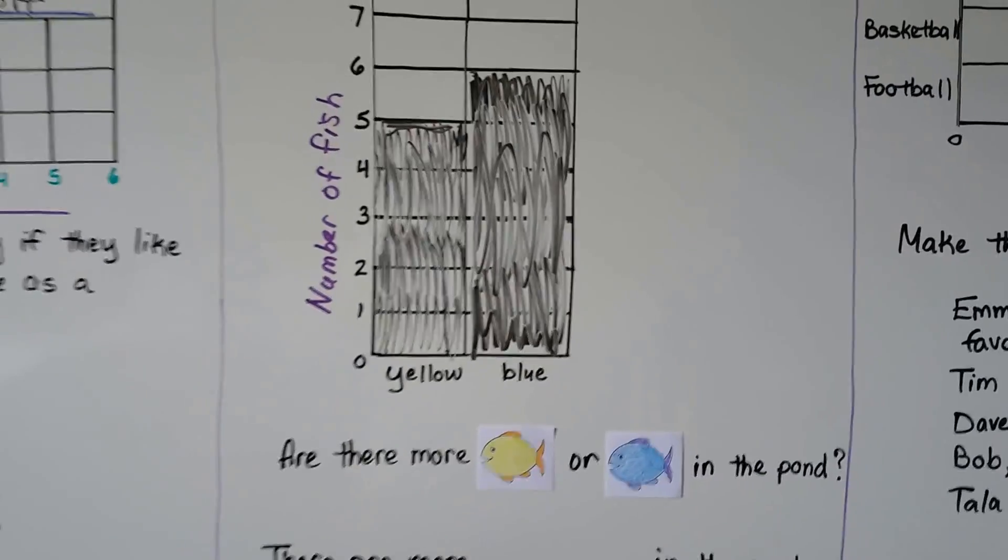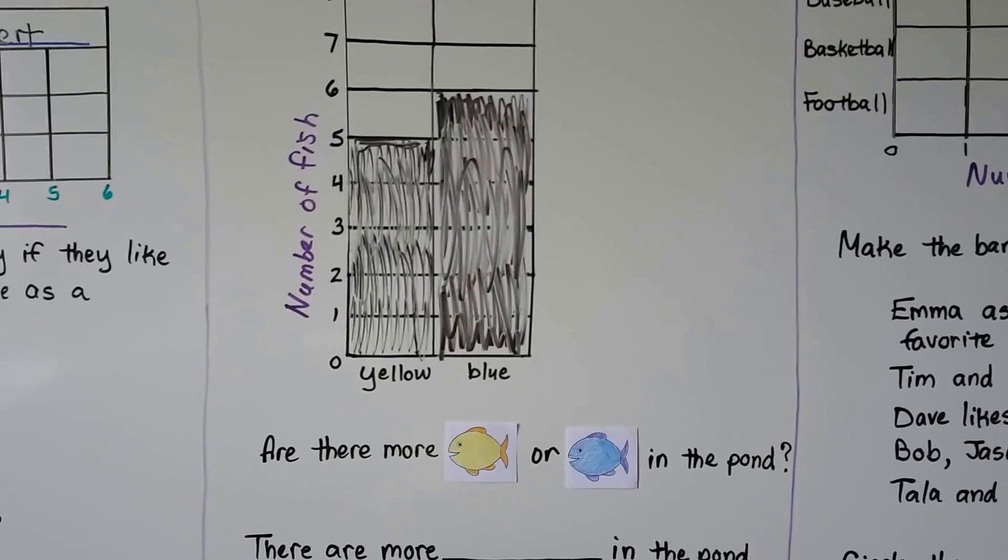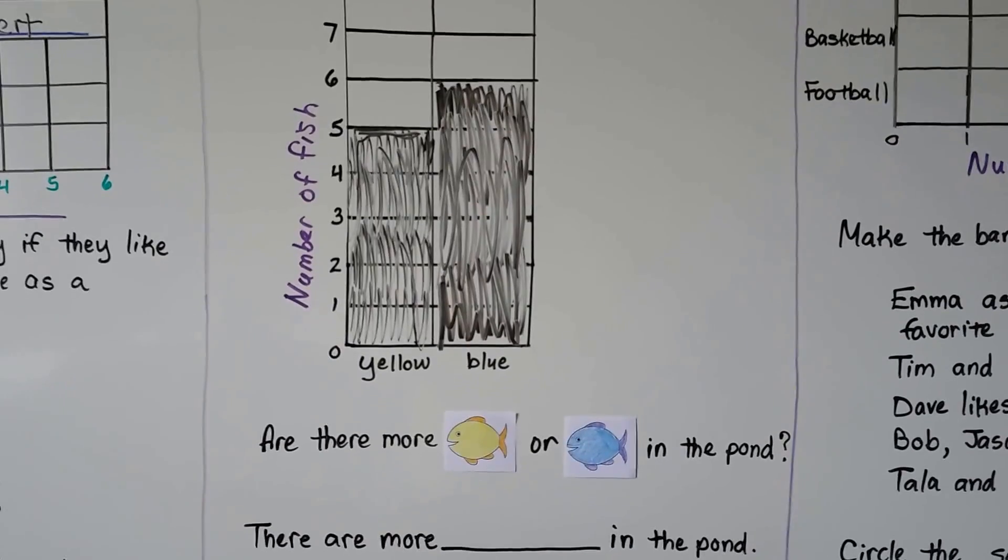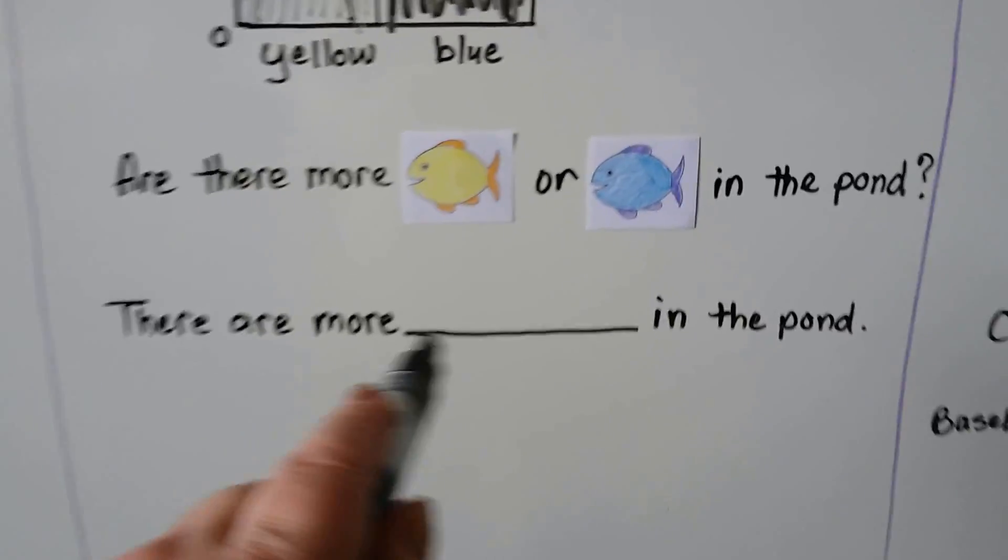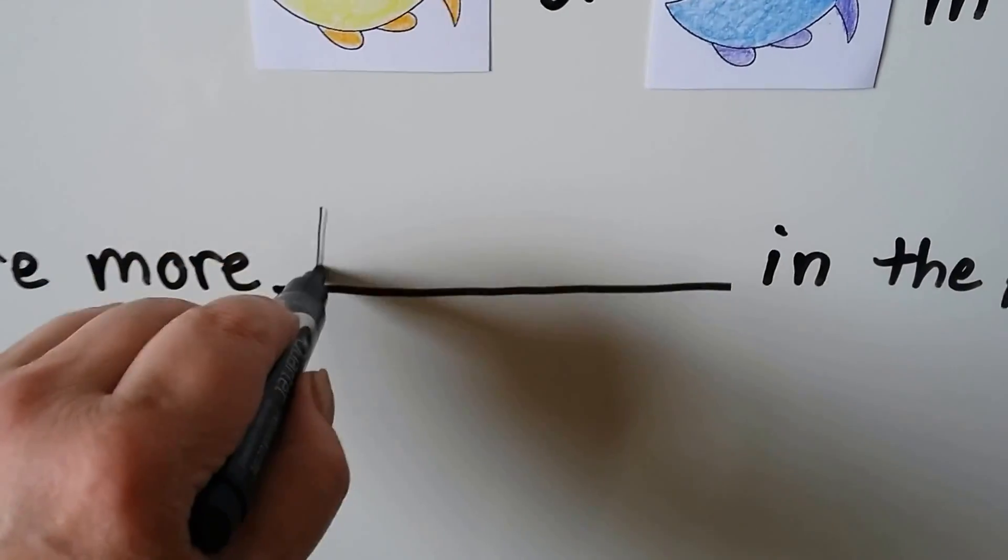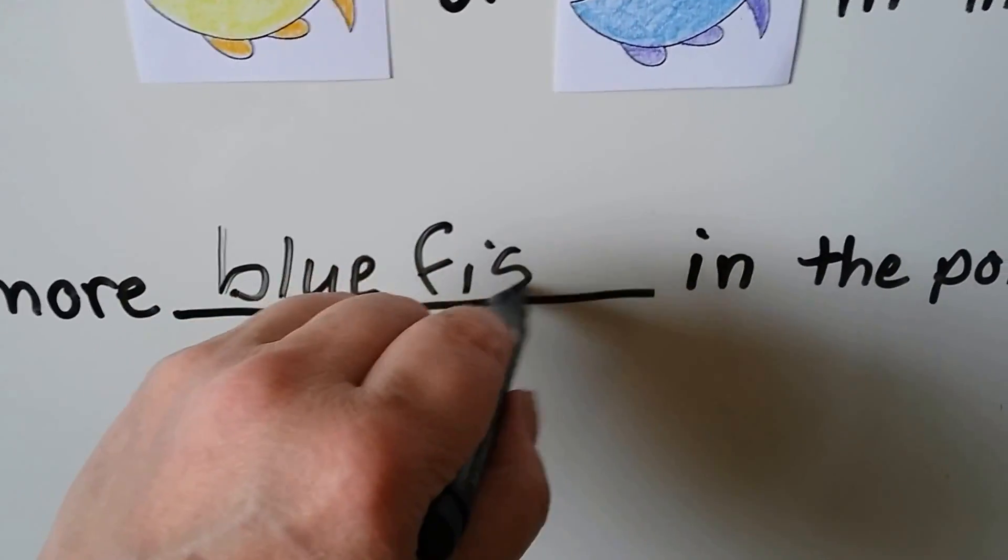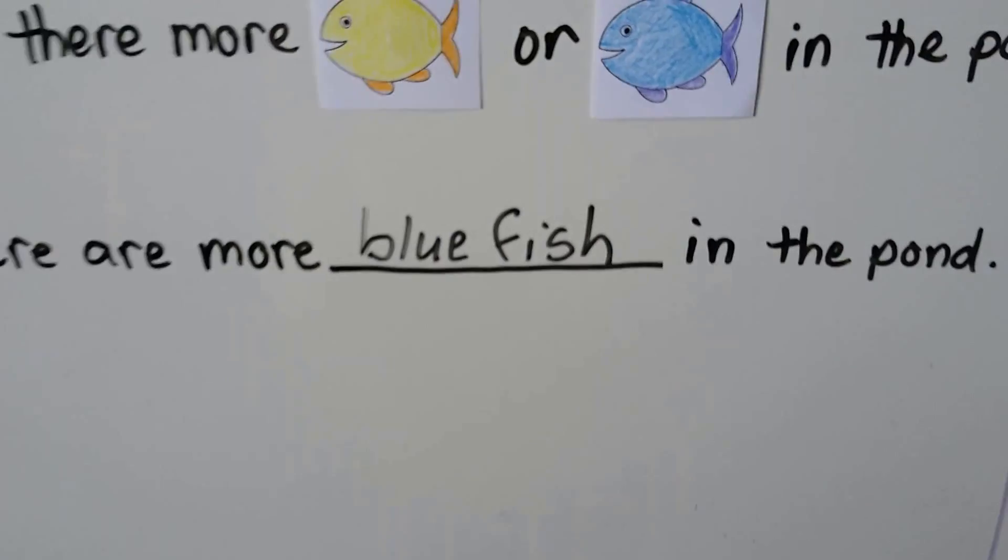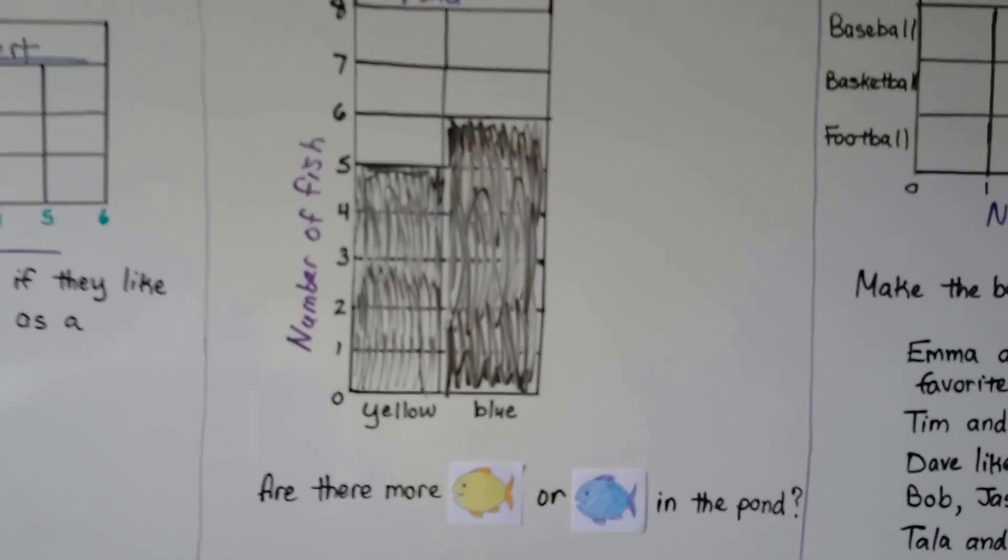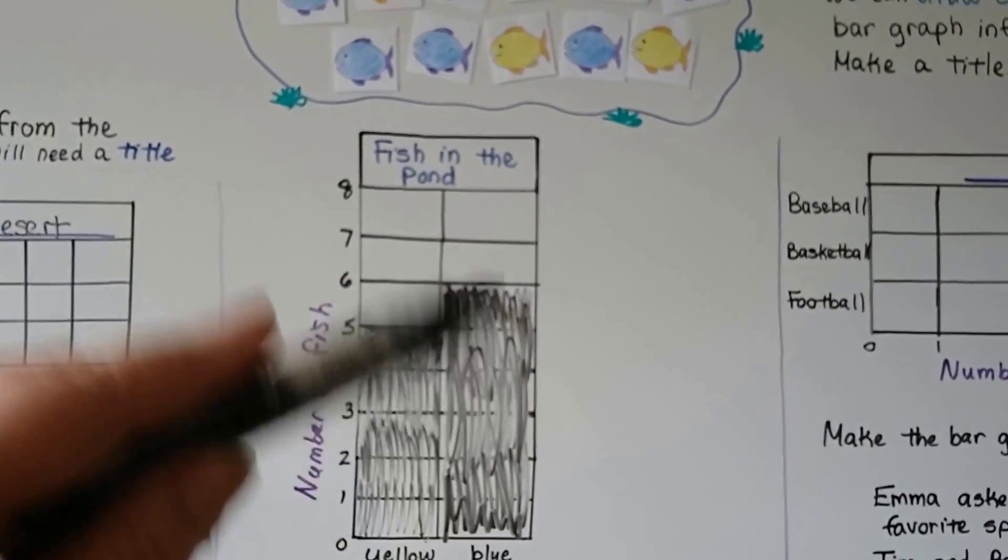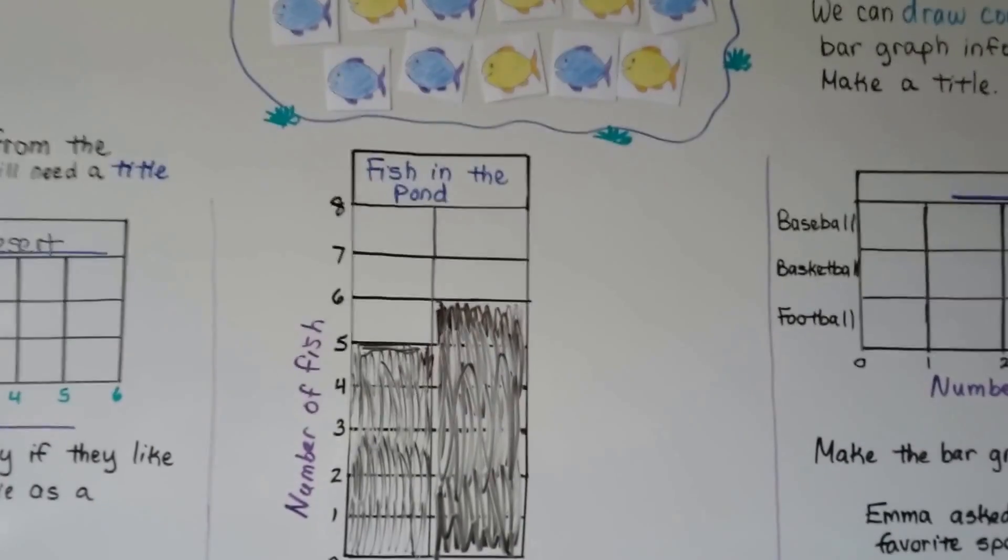So we can see on our bar graph that there's more blue. So are there more yellow or blue in the pond? There are more blue fish in the pond. So we can write blue fish. There are more blue fish in the pond. And our bar graph helped us see that. It's comparing the yellow fish to the blue fish.